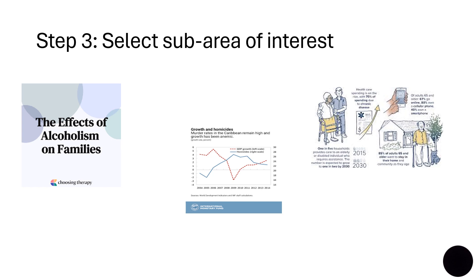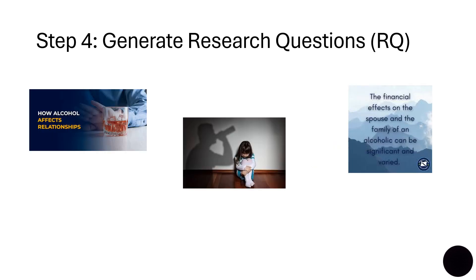Once confident you have selected something you are passionate about and can manage, you are ready for step number four. For example, in step three you may say the sub-area of most interest to you is the effect of alcoholism on the family. In step number four, you have to think about raising research questions. Ask yourself: what is it that I want to find out about in this sub-area? Make a list of whatever questions come to mind, and if there are too many, go through the same process of elimination. A question you might investigate could be: what impact does alcoholism have on marital relationships? Or how does it affect the various aspects of children's lives? Or what are the effects on the family's finances?